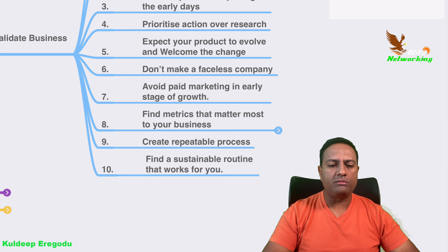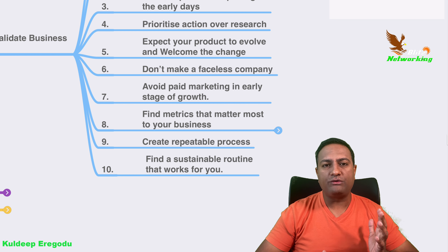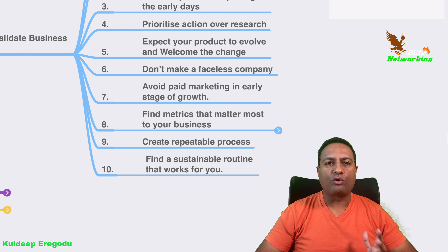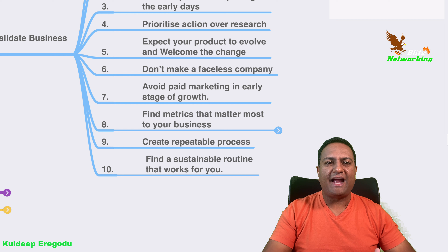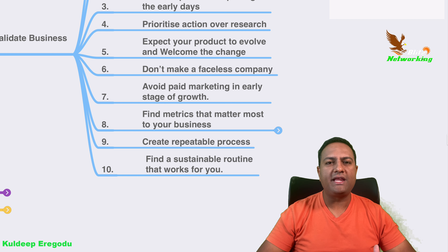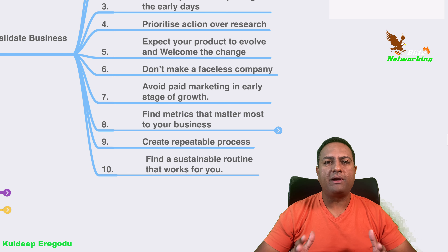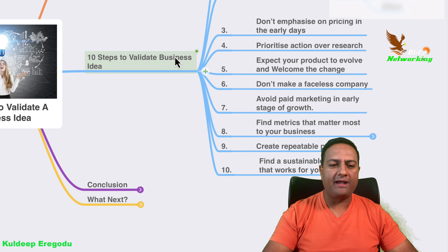Step ten: find a suitable routine that works for you. If you are a very busy person or already running a business, whenever you have a business idea, dedicate just one or two hours a day to it. No matter whether you are working or a student — just devote two hours a day and focus on that particular business. Over time, your business acumen will grow tremendously. If you follow these 10 steps, you will have a better business idea to grow and make it one of the world's best companies.